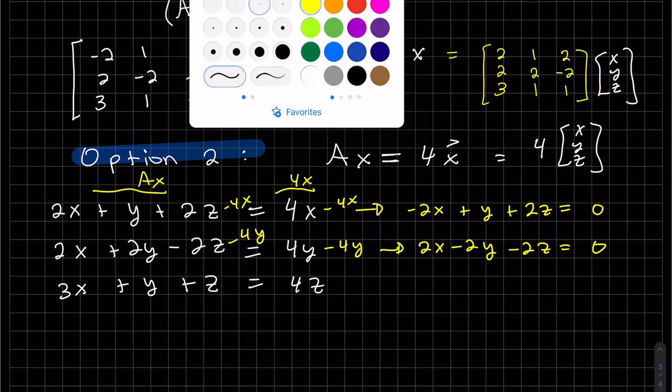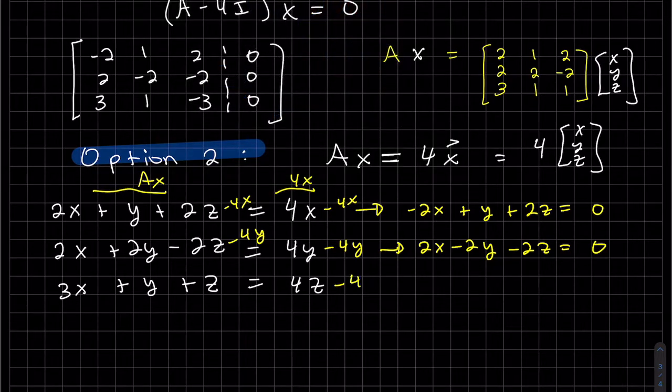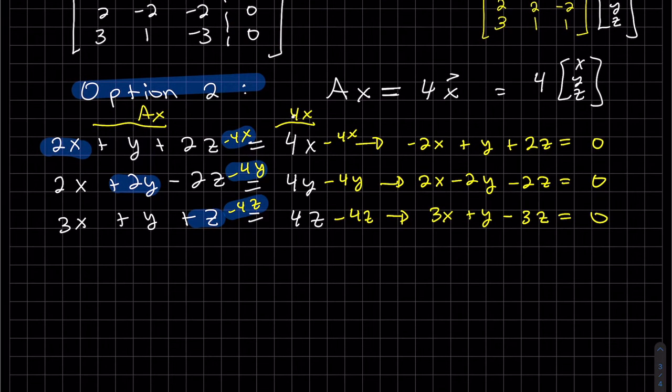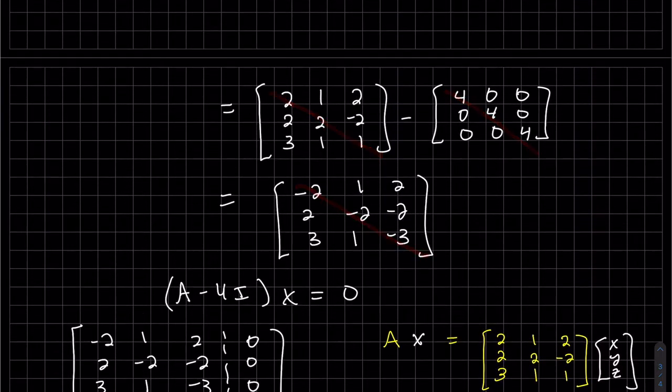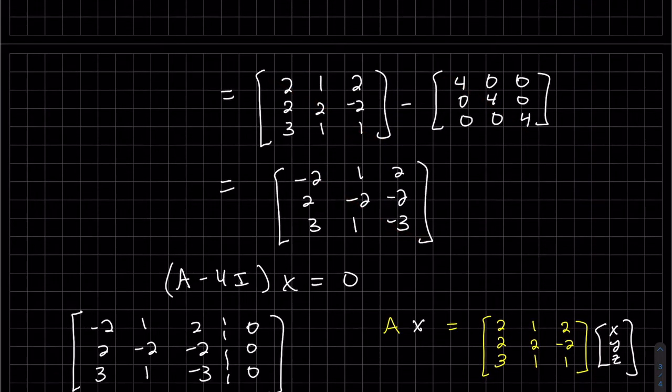And you see here when we subtracted 4x to this side, we subtracted it from this one, and this from the y, and this from the z. We only subtracted 4 from the diagonal, just like we did up here—the diagonal. Everything else stayed the same.